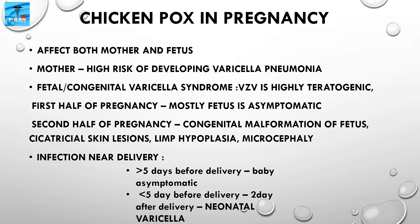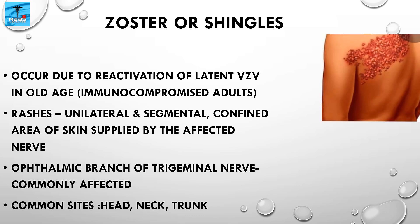In the second half of pregnancy, congenital malformations in the fetus are more frequent, characterized by cicatricial skin lesions, limb hypoplasia, and microcephaly. If the mother gets an infection greater than five days before delivery, the baby is mostly asymptomatic due to protective maternal antibodies. However, if the mother gets an infection five days before to two days after delivery, maternal antibodies would not have been produced in time, leading to dissemination of the virus in the baby and causing neonatal varicella.